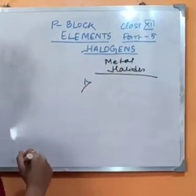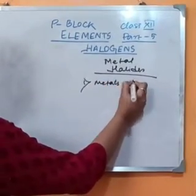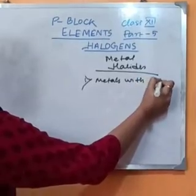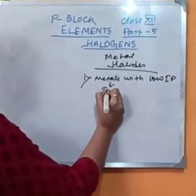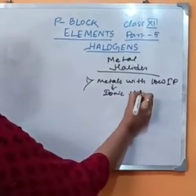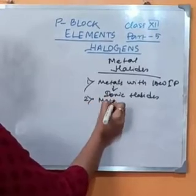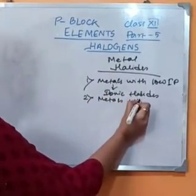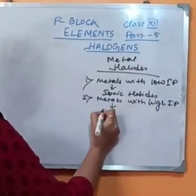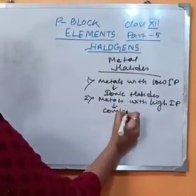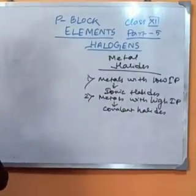In the case of metal halides, metals with low ionization potential will form ionic halides, and the metals with high ionization potential will form covalent halides.